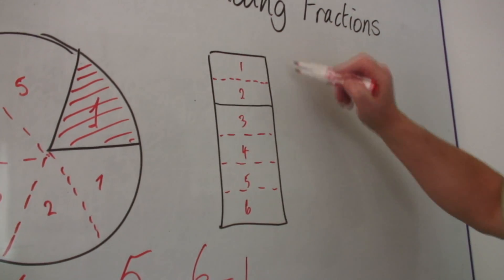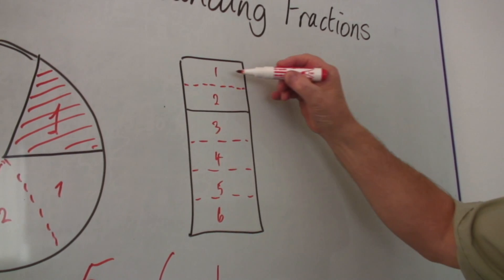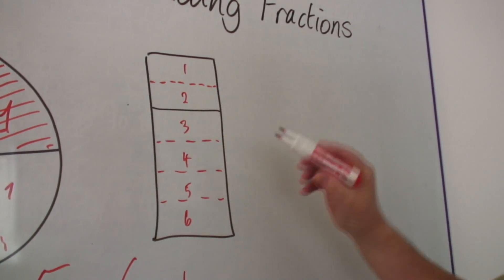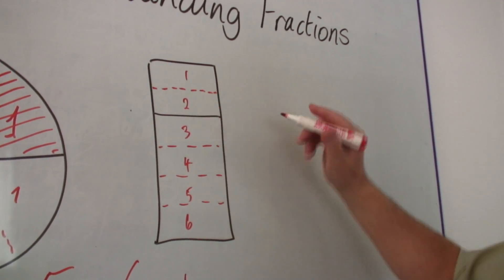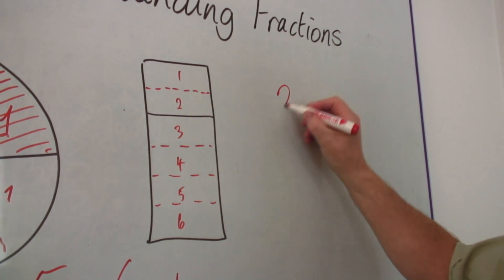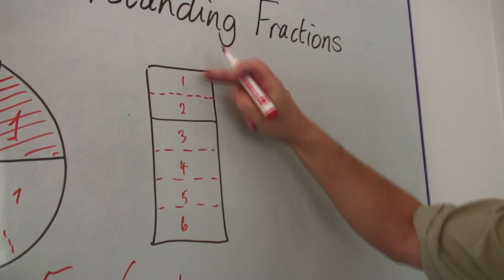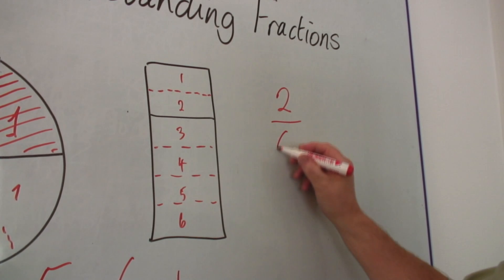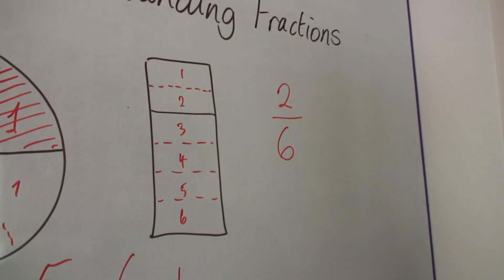I've still got one object, and if I look at these two here, I've got two parts here out of the six altogether. So I've got two sixths.